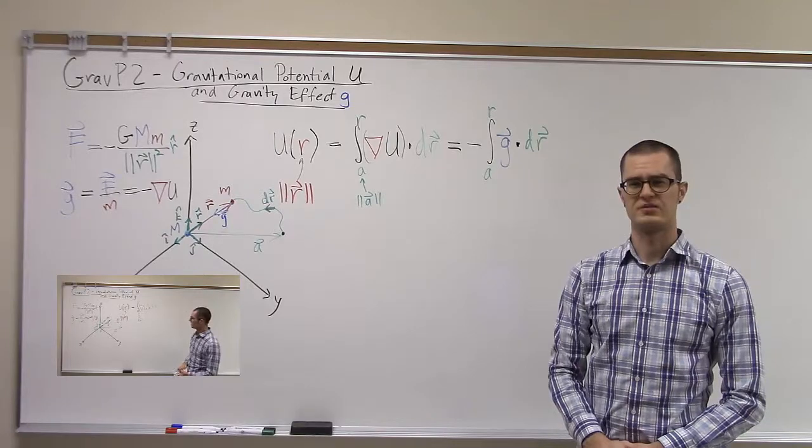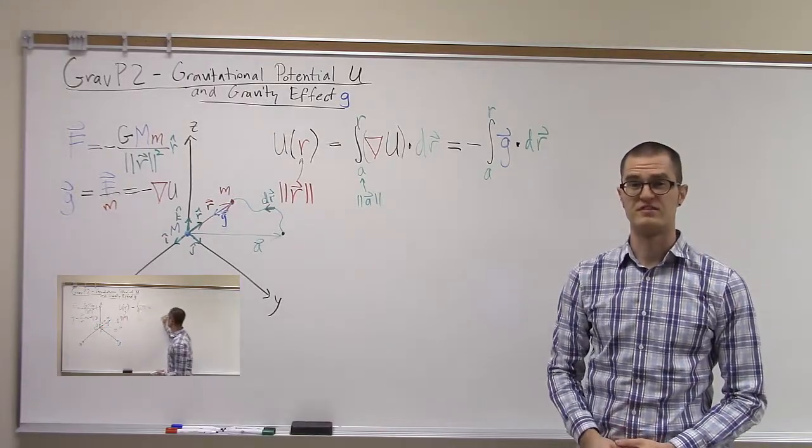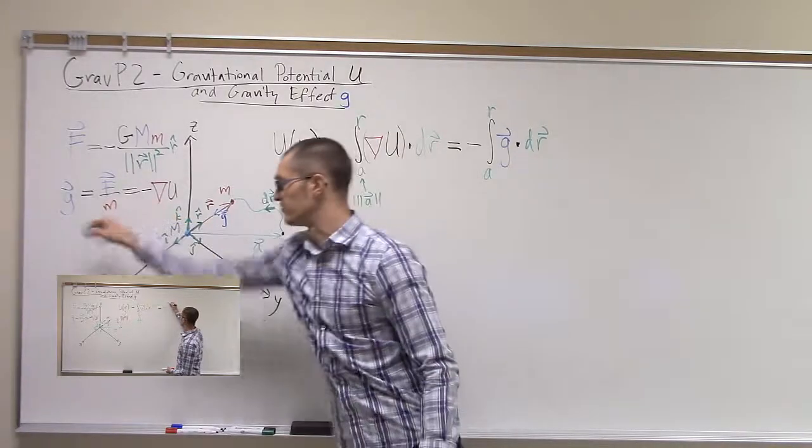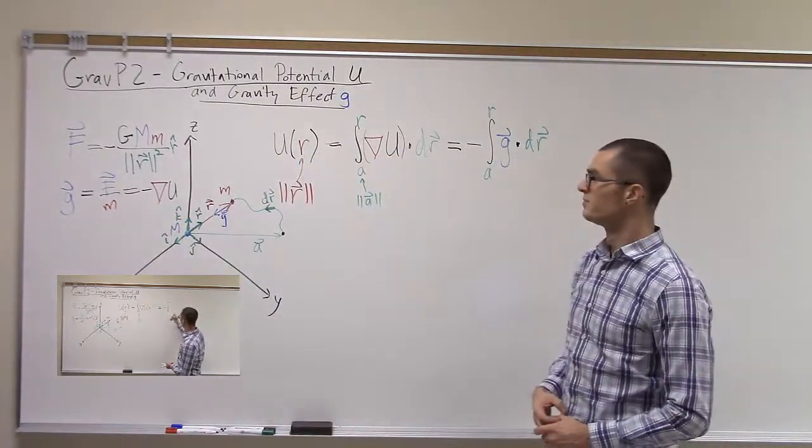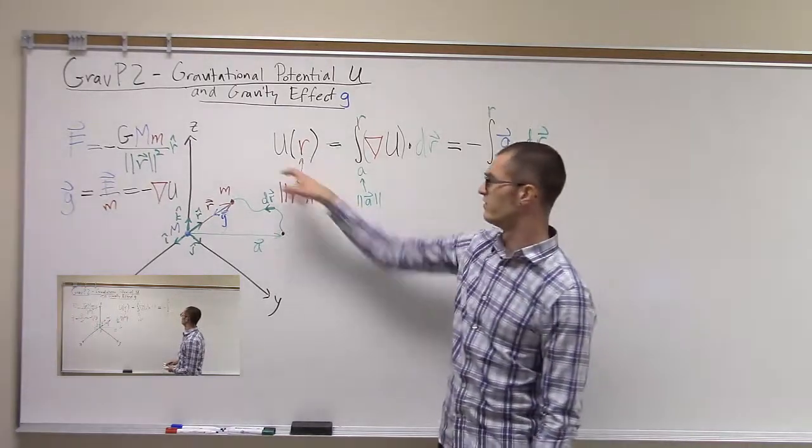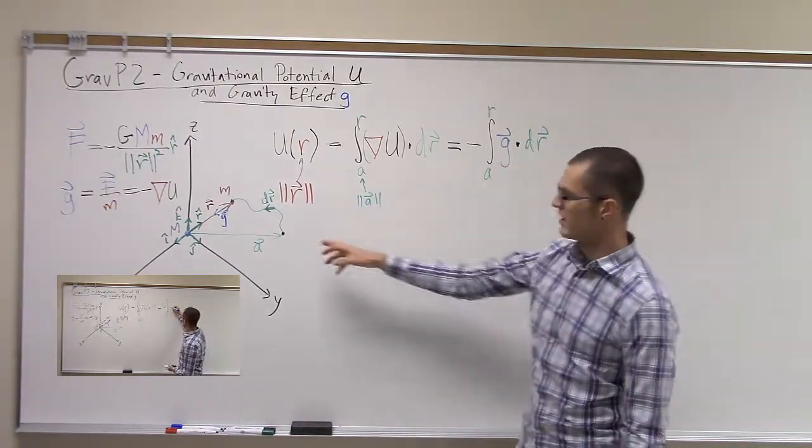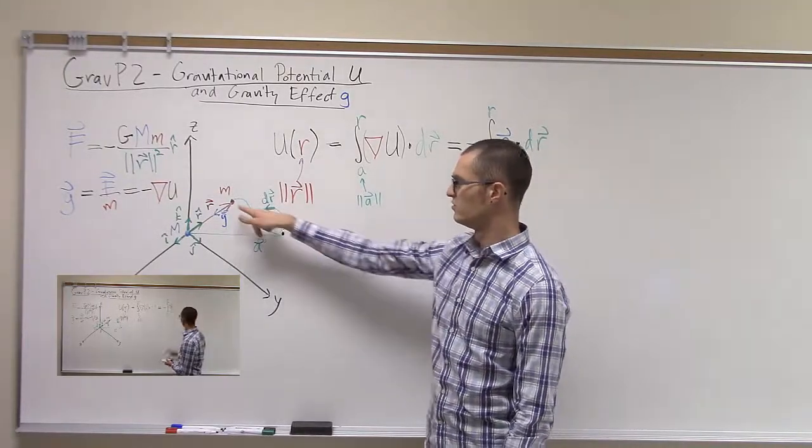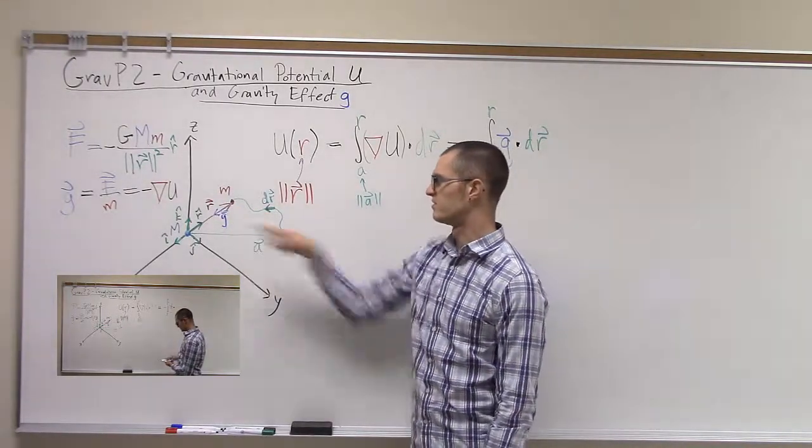In our previous video, we defined what the gravitational potential is. It's a scalar field, and the gradient of it gives us the gravitational field. And we also set up this integration that says that we can get the value of the potential by integrating along an arbitrary path from some point to the point of interest at a distance r here.